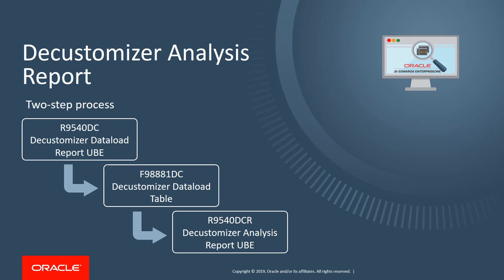Generating the Decustomizer Analysis Report is a two-step process. In the first step, a UBE loads a table, and in the second step, a UBE reads from the table to create a report.